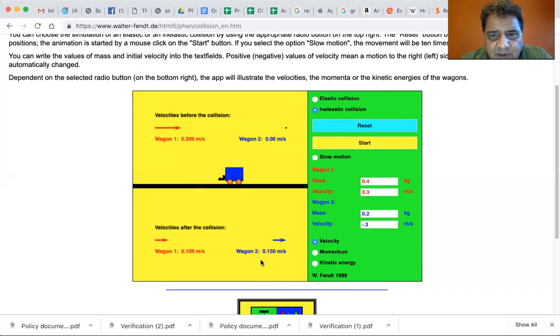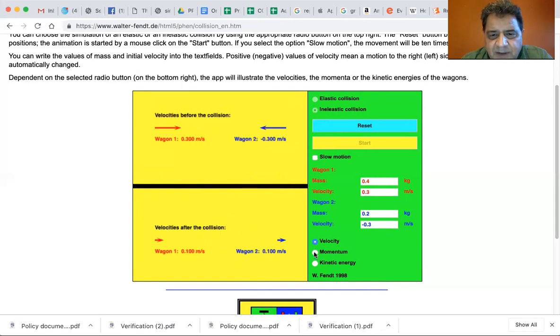And it already shows you the values, I think, so it shows you the pre and the post velocities. Let's start it and okay. The more massive wagon predominated, let's reset it and do it, look at it in the momentum.